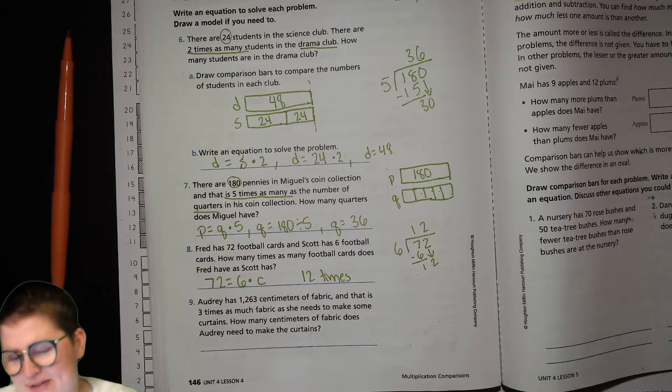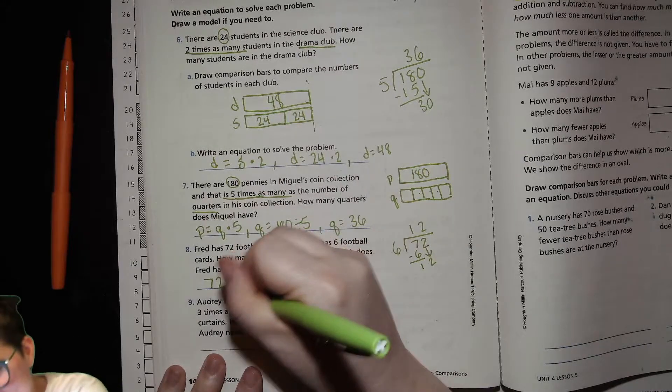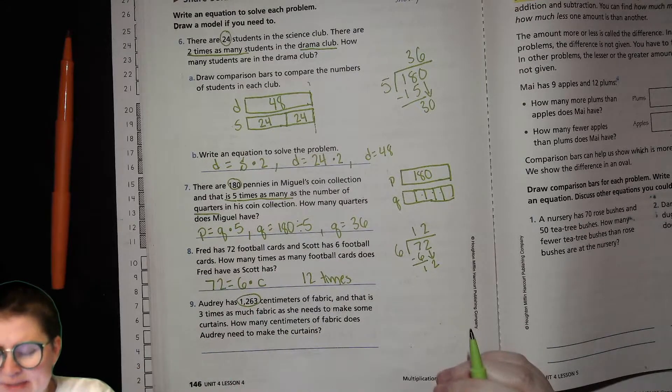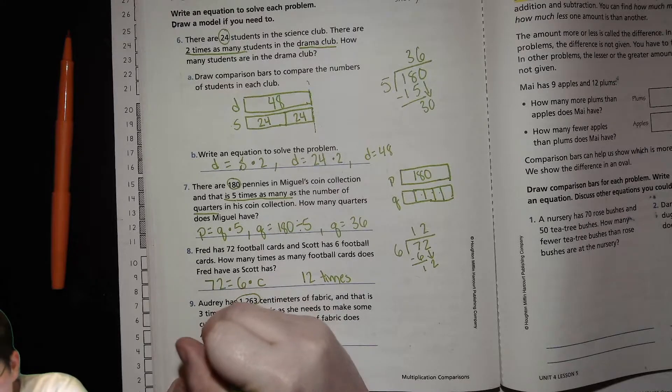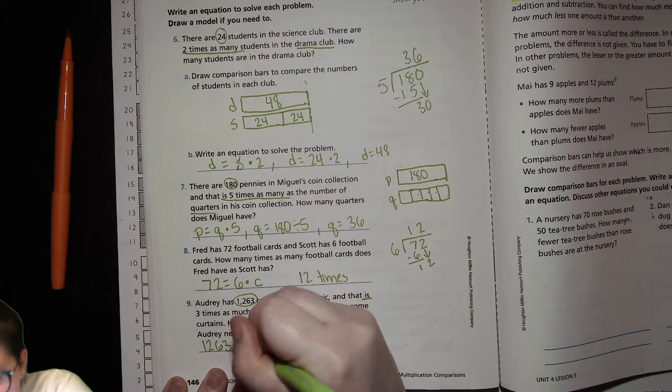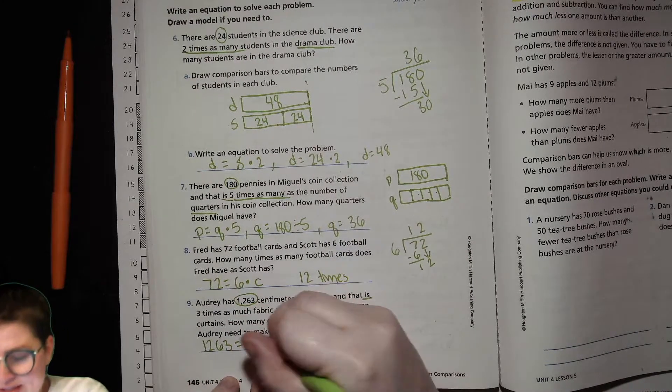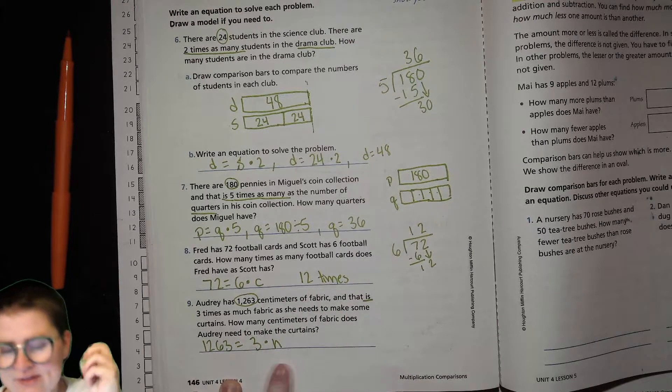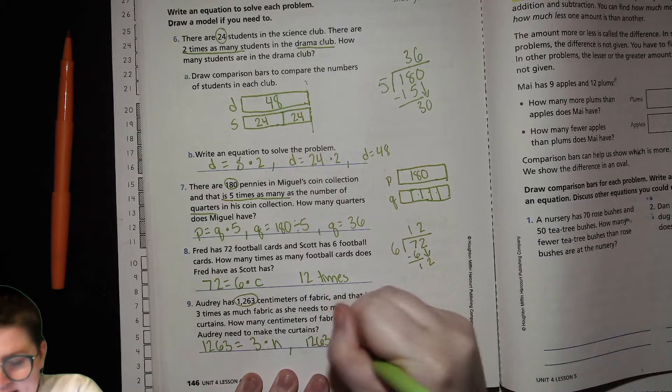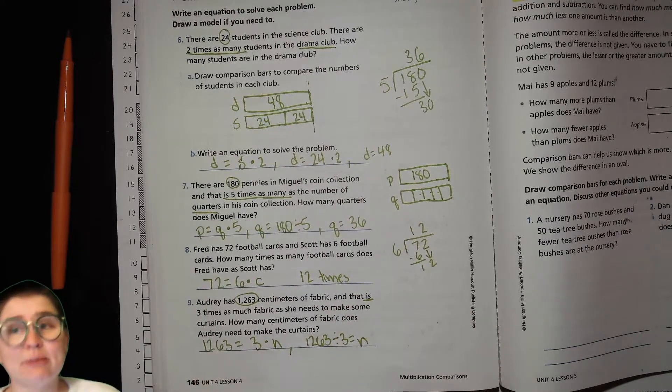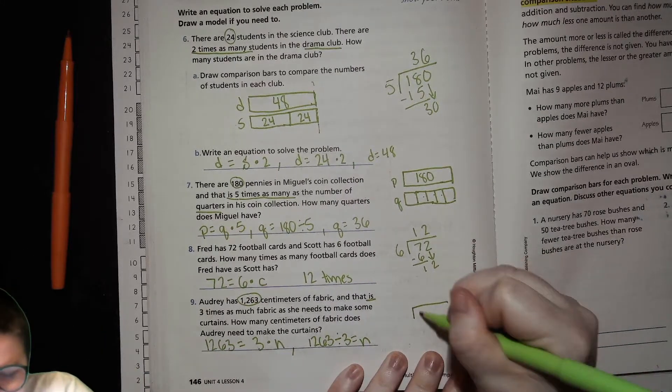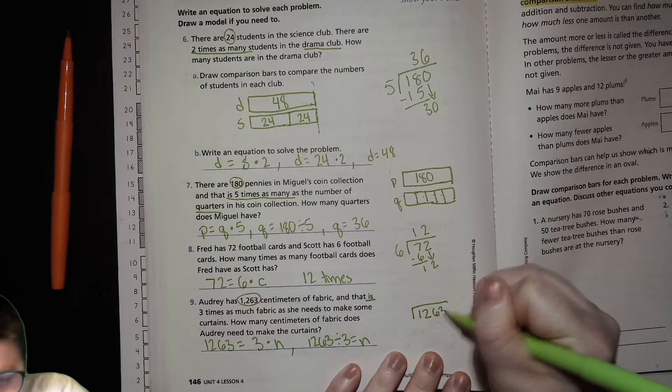All righty, last one, my dears. Audrey has 1263 centimeters of fabric and this amount is three times as much fabric as she needs to make some curtains. So here's the equation. 1263 equals because that is three times the amount that she needs. Three times the needed amount. So then how do we find that answer? Well, we're going to go 1263 divided by three equals n. How that operation can be switched around with our inverse operations. So then right here, we're going to do 1263 divided by three.